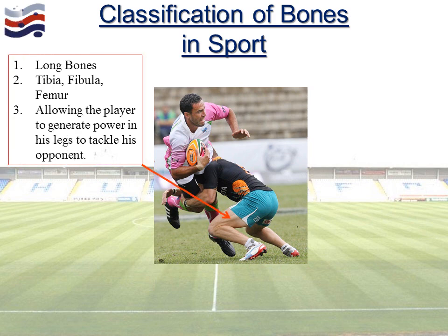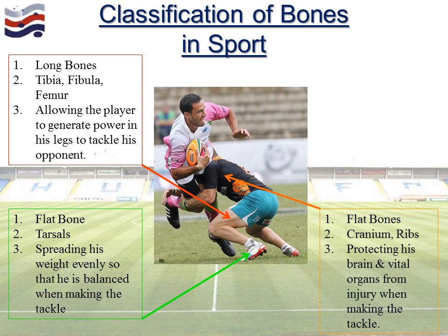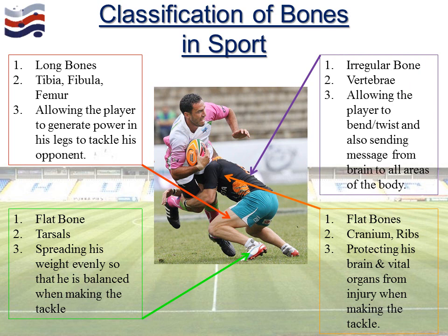Welcome back. Starting with long bones — focusing on the tibia, fibula and femur — in this image they allow him to generate power in his legs to tackle his opponent through bending and then driving forward. The short bones: the tarsals in his feet are spreading his weight evenly so that he's balanced when he makes the tackle. Flat bones — the cranium or the ribs — protect vital organs during the collision. And lastly the vertebrae, which allows bending and twisting, but also sends signals around the rest of the body from the brain, telling him to get into position, what to do with his legs and arms. That's how we apply classifications of bone in sport.